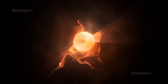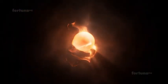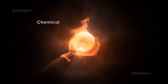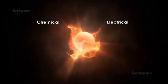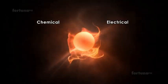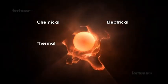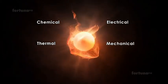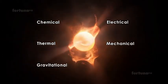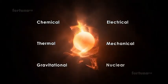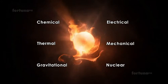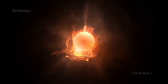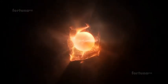Energy can be found in one of six forms: chemical, electrical, thermal, mechanical, gravitational, or nuclear. Let's take a brief look at the differences between these six types.